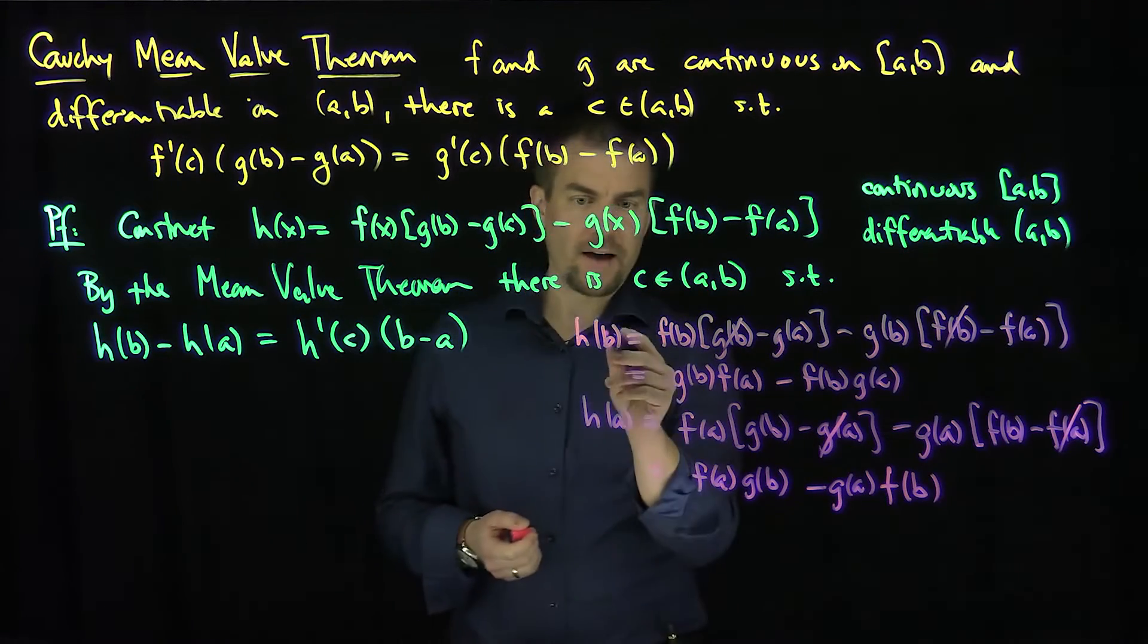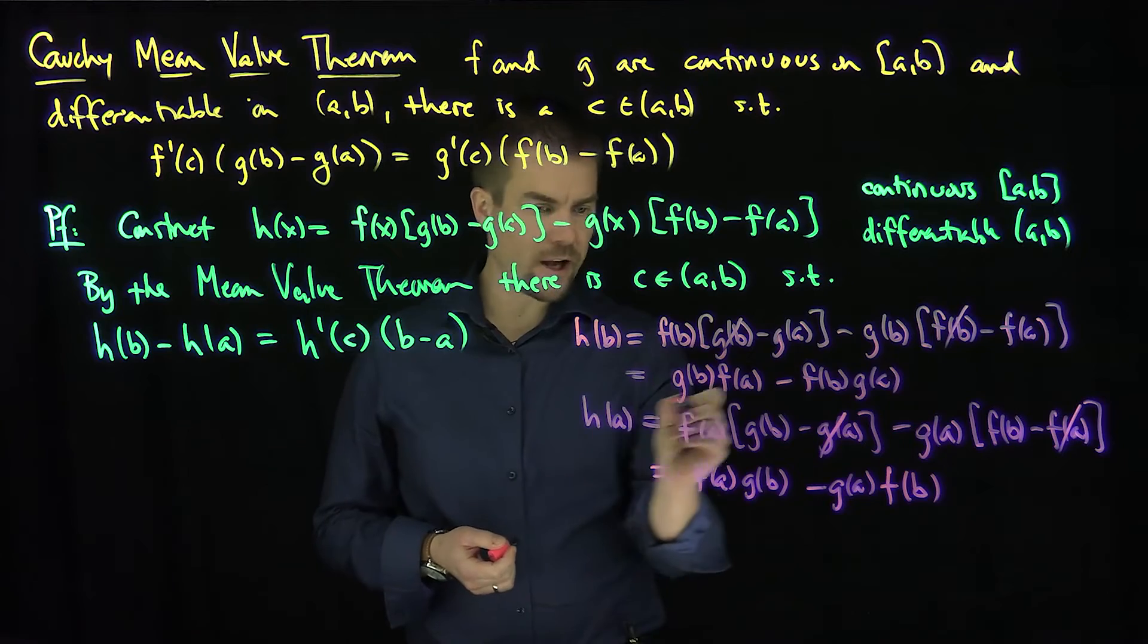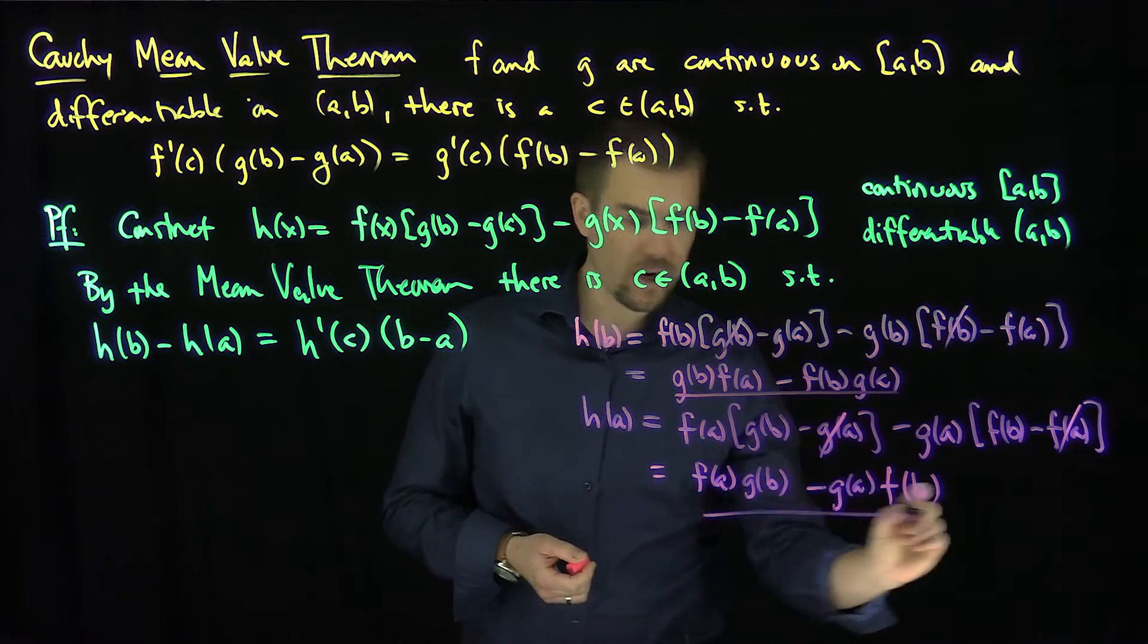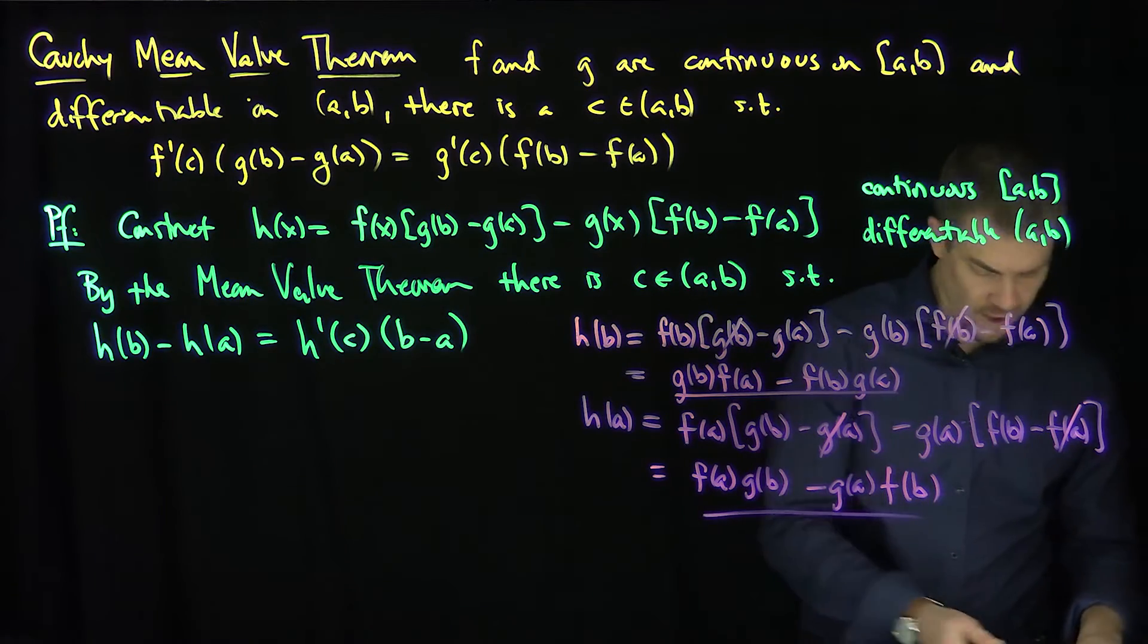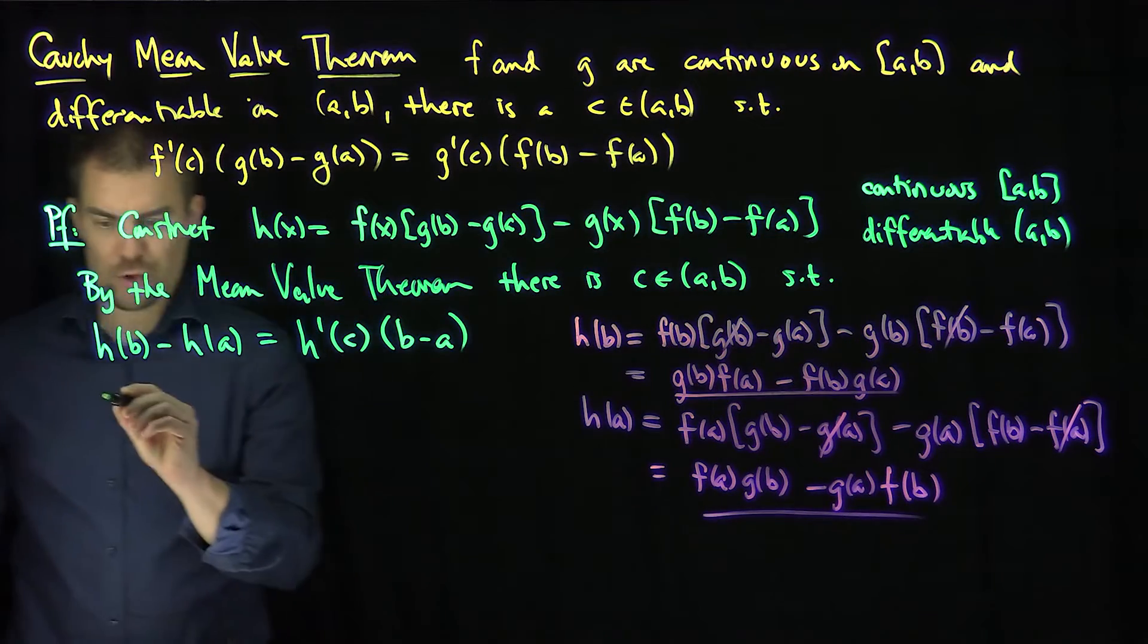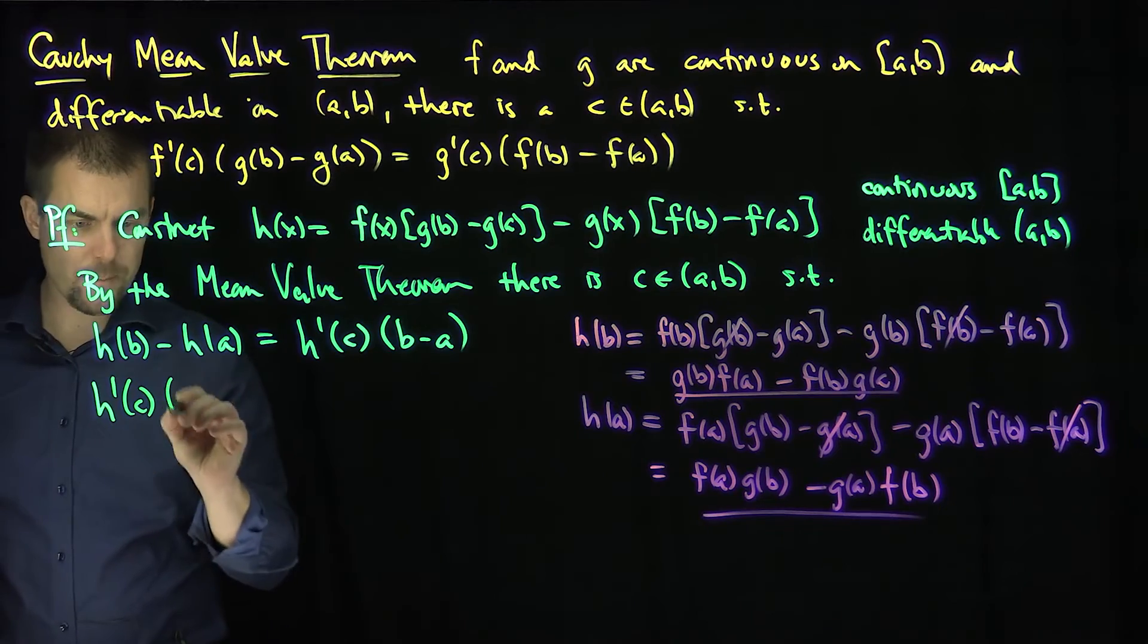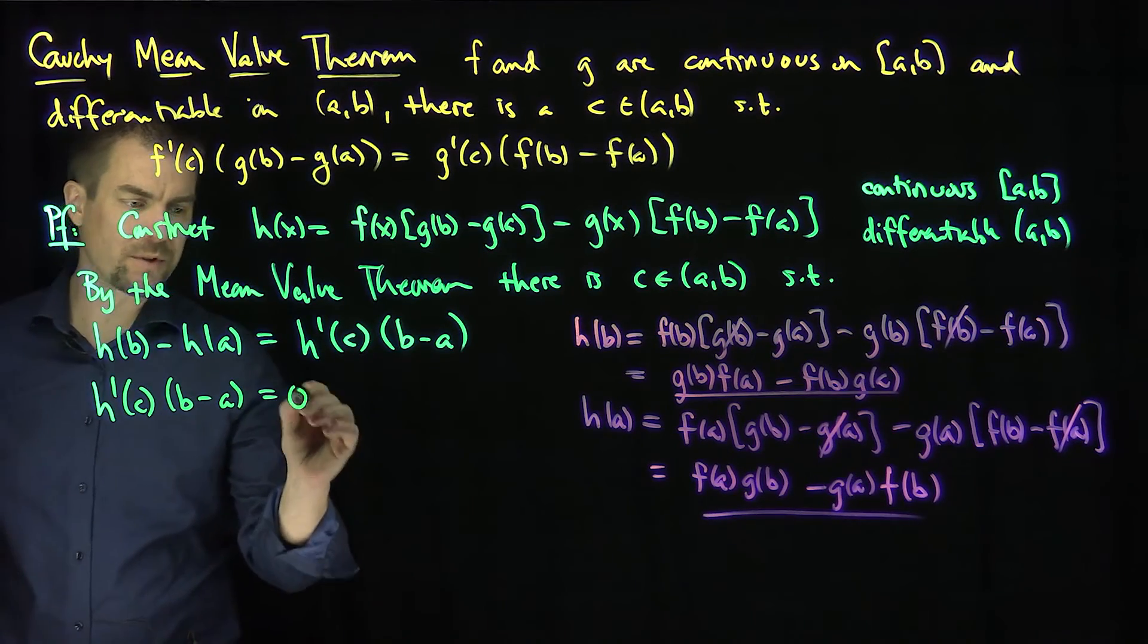It looks like h(b) and h(a) are exactly the same expression. So when you subtract h(b) from h(a), you will get zero. So you get zero over there, which is good news. So that says that h'(c) times (b - a) is equal to zero.